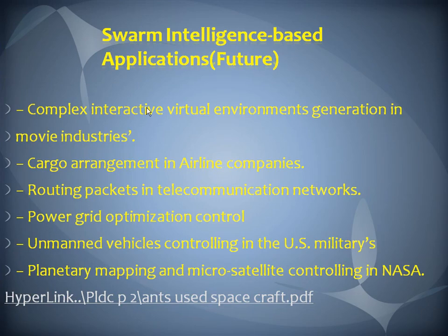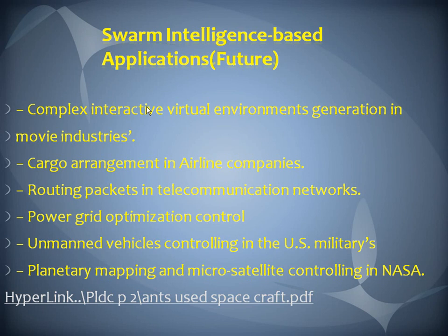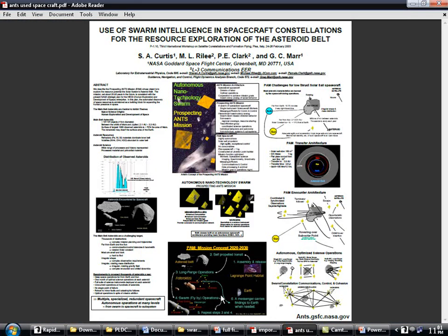Let's talk about some swarm intelligence applications. It helps to build complex interactive virtual environments and more intensive activities. Second is cargo management in airline companies. Another application is routing packages in telecommunication networks, and property optimization and control, which is an important category. It also helps the military to control vehicles. And the final one is planetary mapping and micro-battery controlling in NASA. Following this, as an example, there is an autonomous nanotech swarm intended for future use — NASA has created a special craft using this same theory.